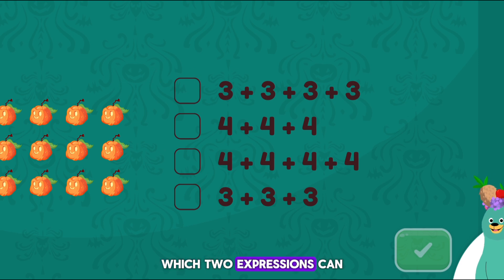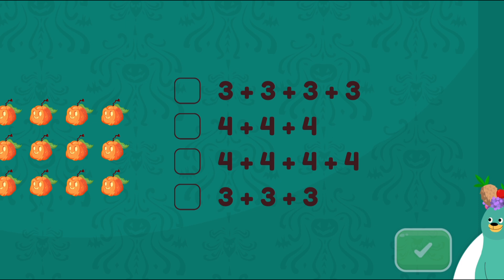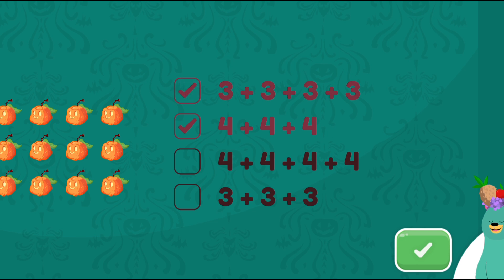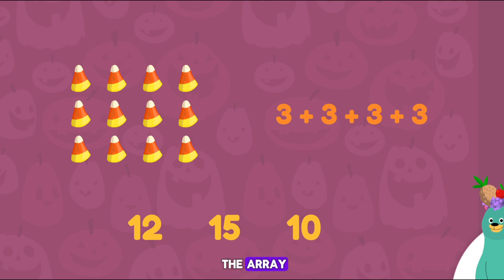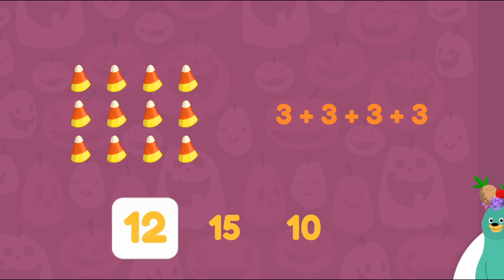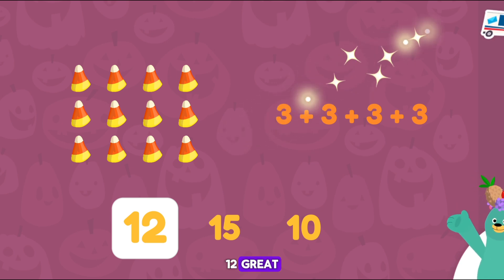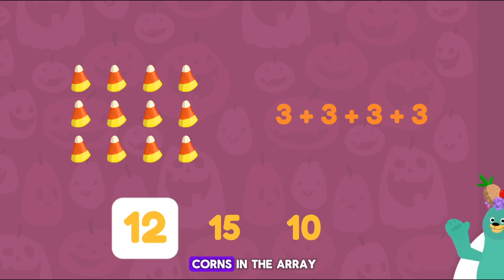Which two expressions can you use to describe the array? 4 plus 4 plus 4. 3 plus 3 plus 3 plus 3. Great! Use the expression to find out how many candy corns are in the array. 12. Great! There are 12 candy corns in the array.